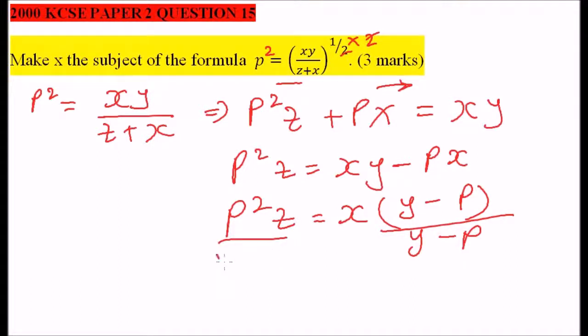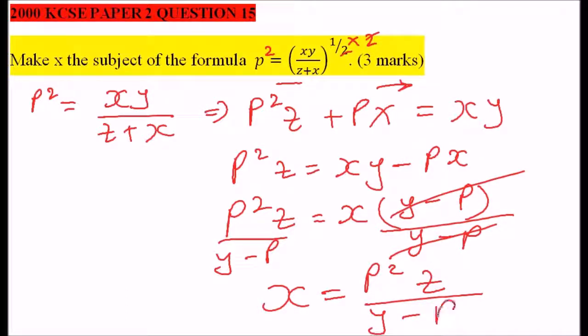We divide by y minus p, and this cancels. So we have x on one side. Therefore, x equals p squared z divided by y minus p. And that's how you work it out.